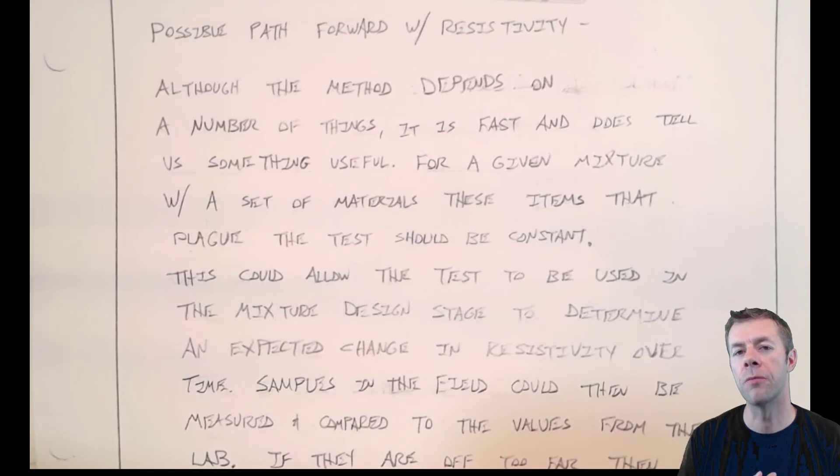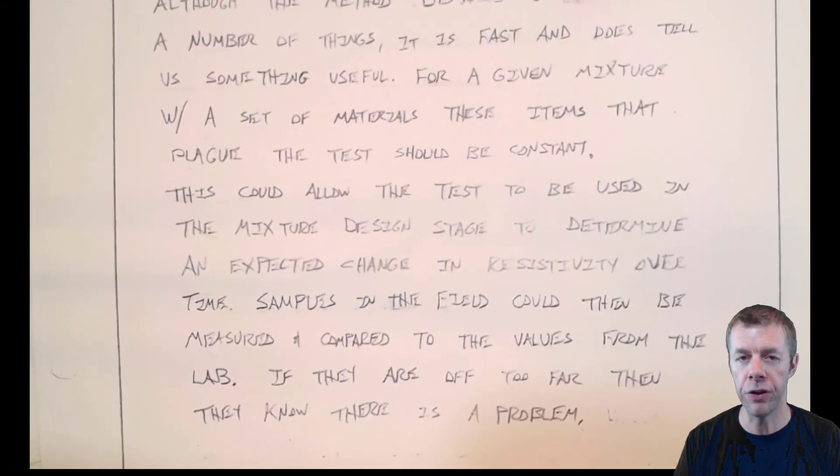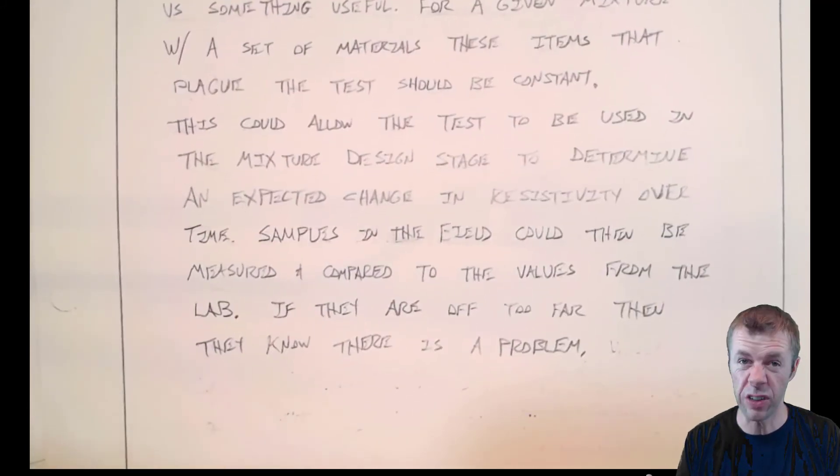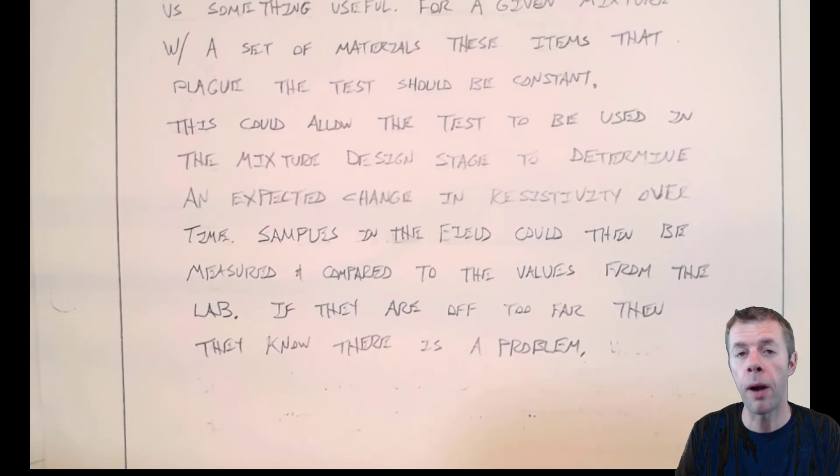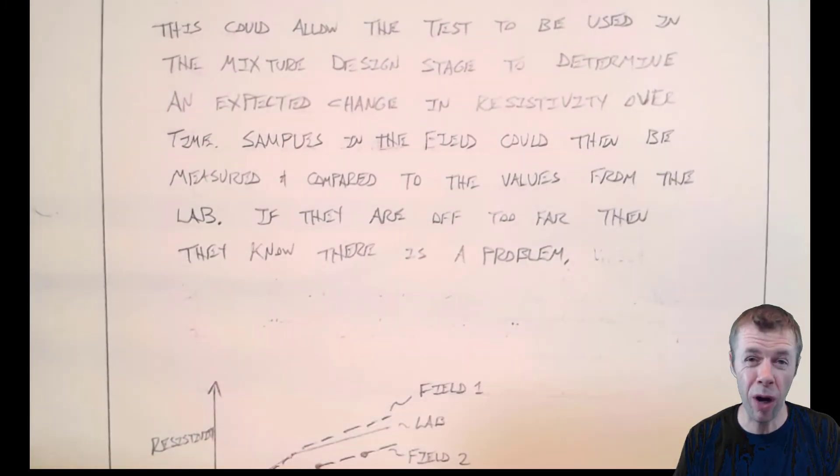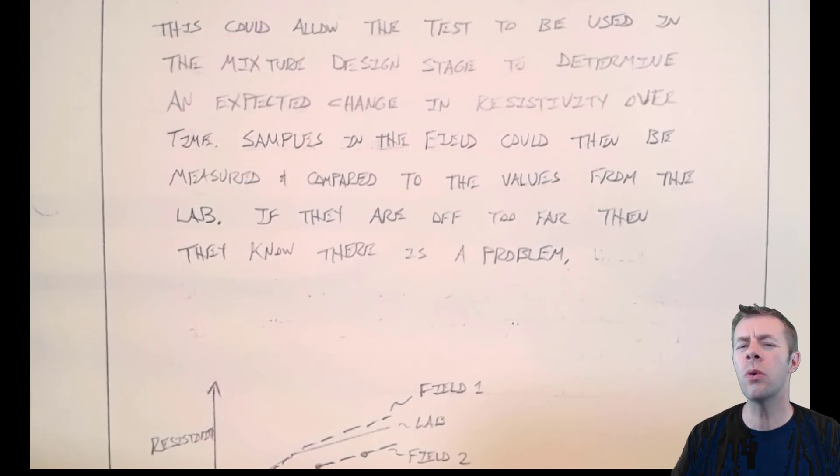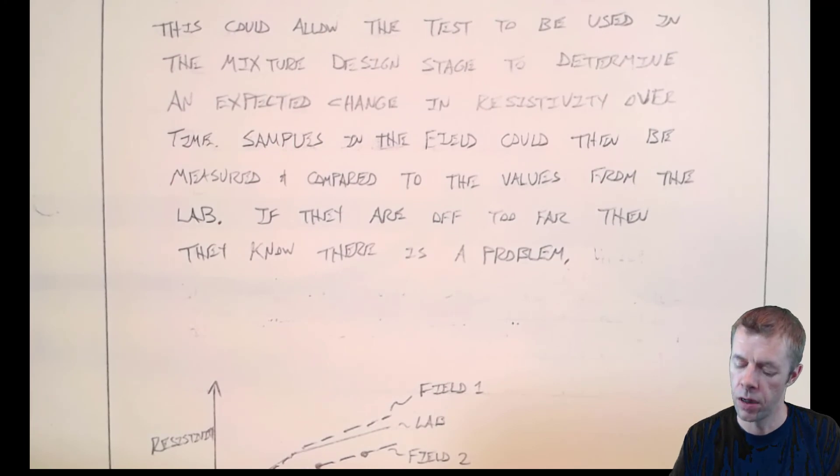This could allow the test to be used in the mixture design stage, as in when you're putting all your mixture materials together. You could run this test, and then you could compare it to what's produced in the field to see if it changes. And samples in the field, if they're very, very similar to what's in the lab, then you'd think the mixtures are probably pretty similar, and they're doing everything right. Because it's much easier to get things right in the lab than it is in the field. And this test might give us insight into that. But if they're far off, then we'd know there's a problem, or at least that something is different. We don't always know what causes it. And it may not be a horrible problem, but we would know something is different, and we could go look for it. And that's helpful.